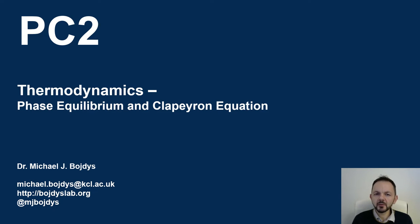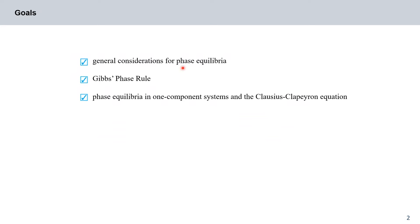Welcome to Physical Chemistry 2. In the thermodynamics part of the course we will first look at phase equilibria and the Clausius-Clapeyron equation. This week we will begin with some general considerations, then learn about Gibbs phase rule and the relationship between the number of phases, components, and freely selectable variables. After that we will deal with phase equilibria in one-component systems, and discuss the Clausius-Clapeyron equation.